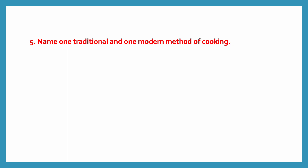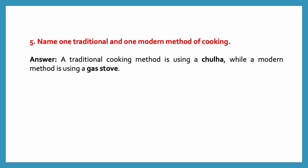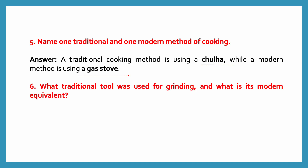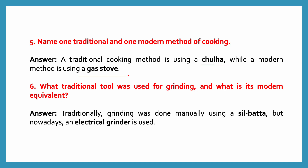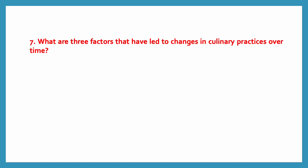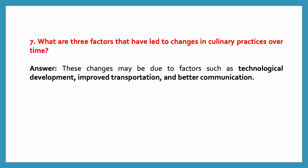Name one traditional and one modern method of cooking. A traditional cooking method is using a chulha, while a modern method is using a gas stove. Traditionally, grinding was done manually using a silbata, but nowadays an electrical grinder is used. Changes in culinary practices are due to factors such as technological development, improved transportation and better communication.